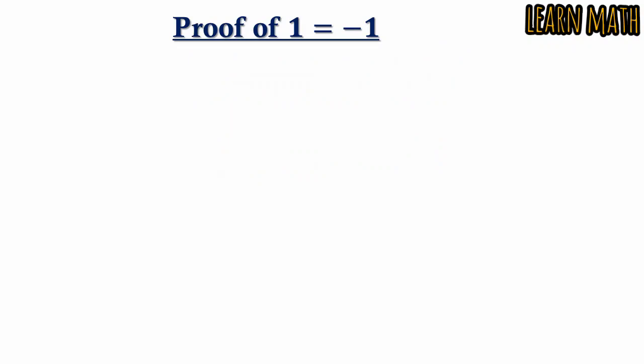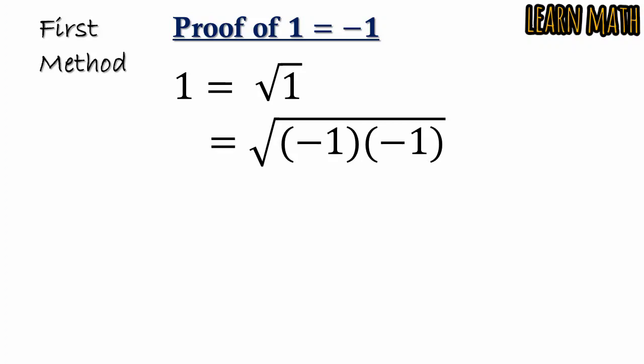People are trying to prove it by two methods. The first method is: 1 equals √1. We will suppose this and after that we can write 1 equals (-1) × (-1). After that you can write √((-1)²). Then you cancel the square root with the square and you get -1.